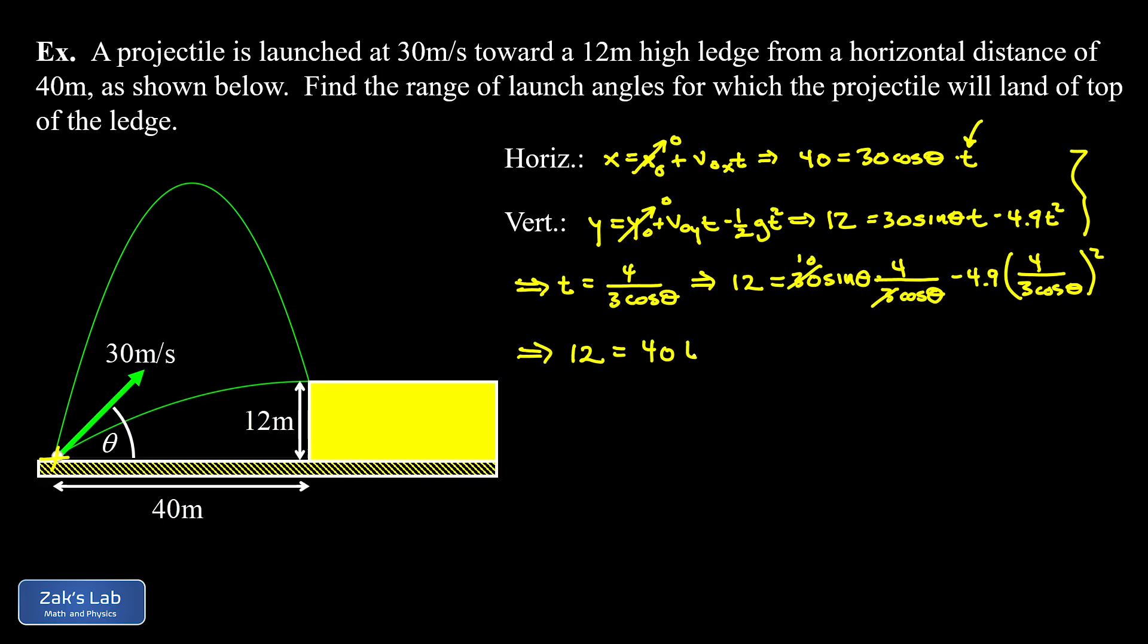So I ended up with 12 = 40tan(θ). And then our quadratic term is going to be 4.9 times 16/9 times 1/cos². But 1/cos is the secant function and it's advantageous to write it this way, sec²(θ).